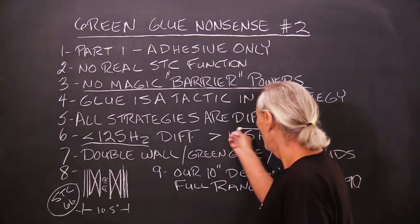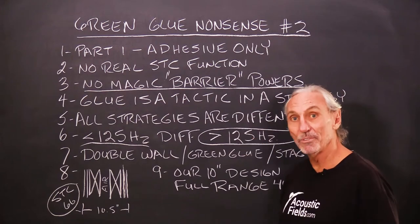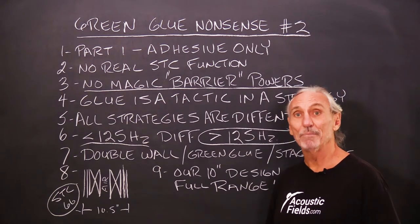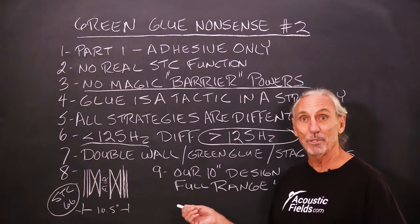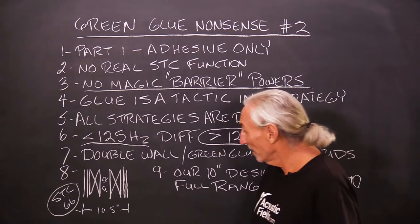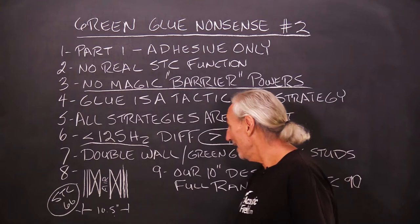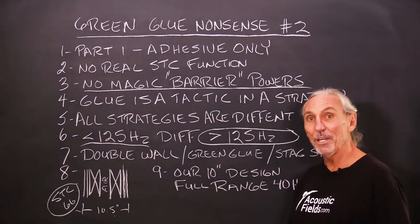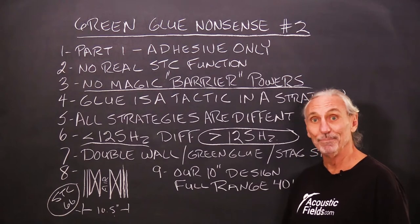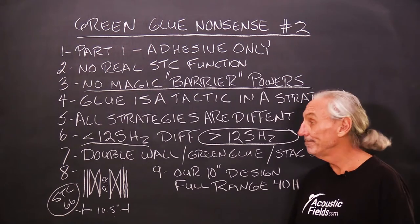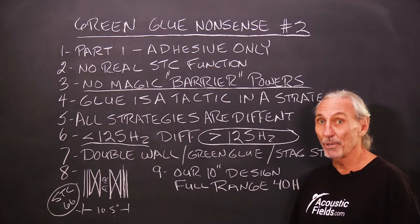It only works above this frequencies because I've tested many of these combinations. So will it isolate? Will it be a barrier? Sure, you're giving up ten and a half inches of space to only achieve attenuation above 125 cycles. Will it work in a home theater? Nope. Will it work in a control room? Nope. Will it work in a drum room? Nope.